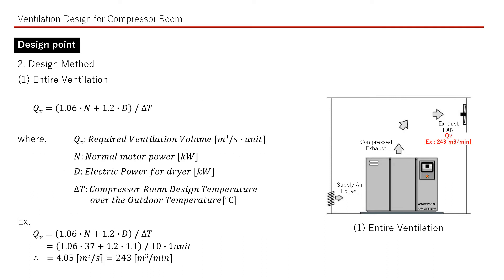We can calculate the required ventilation volume from this formula. Where QV is the required ventilation volume, N is the normal motor power, D is the electrical power for the dryer, and delta T is the compressor room design temperature over the outdoor temperature. As an example: when N is 37 kW, D is 1.1 kW, and delta T is 10 degrees for 1 unit, then QV is 243 m³ per minute. Of course, we shall consider a safety factor when selecting a fan.